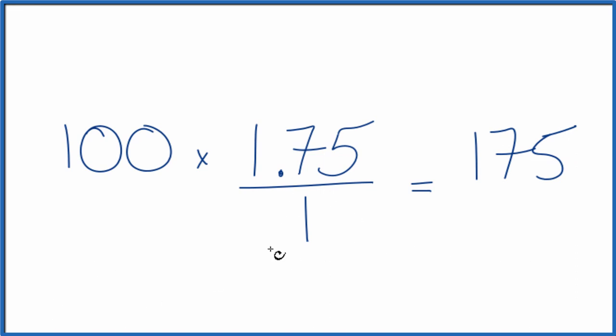But we also have to multiply the denominator by 100 as well. That's because 100 over 100, that's equal to 1. So we're multiplying this by 1. We don't change the value, just the way it's represented. So 100 times 1, that is 100.